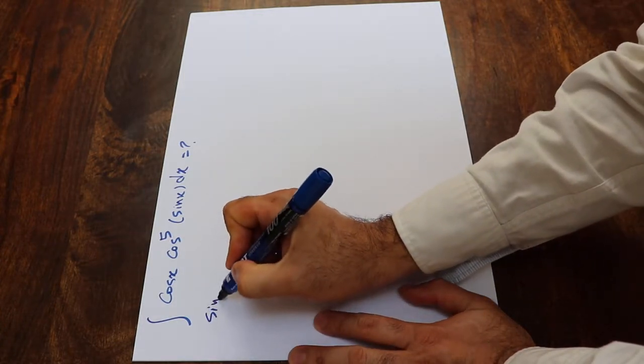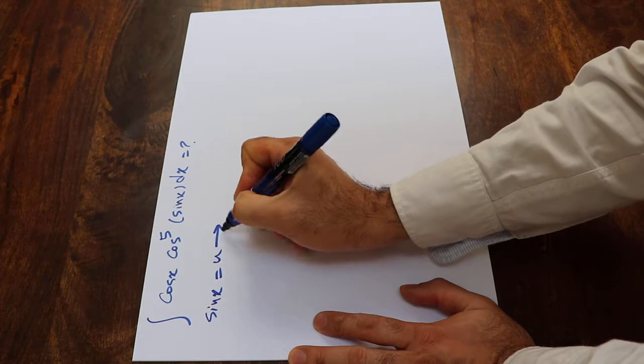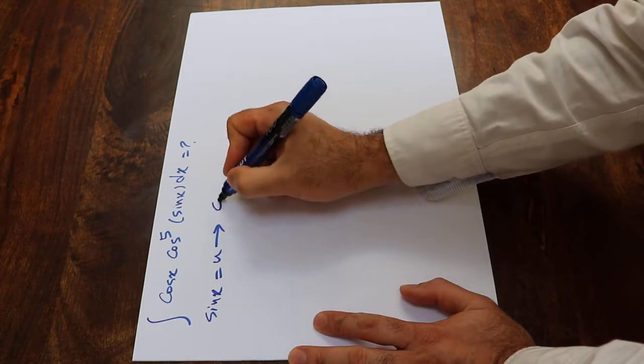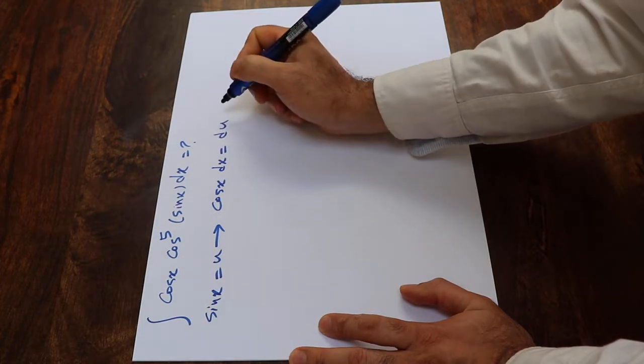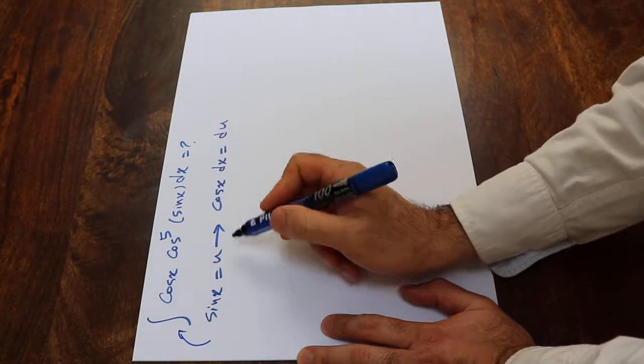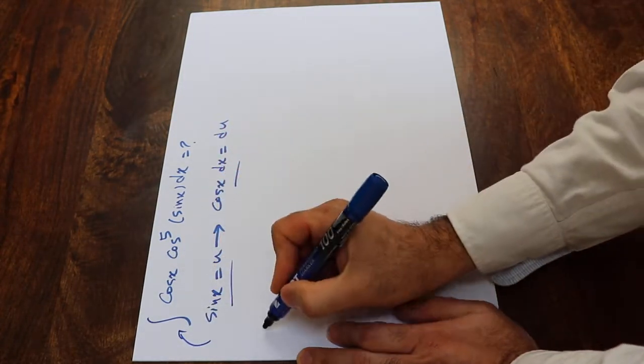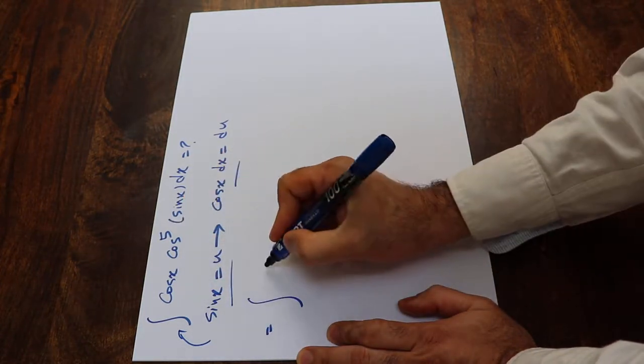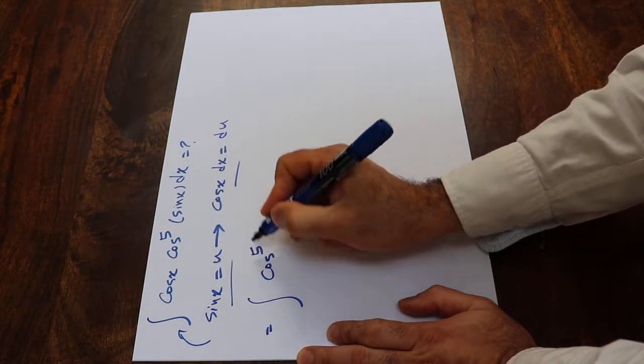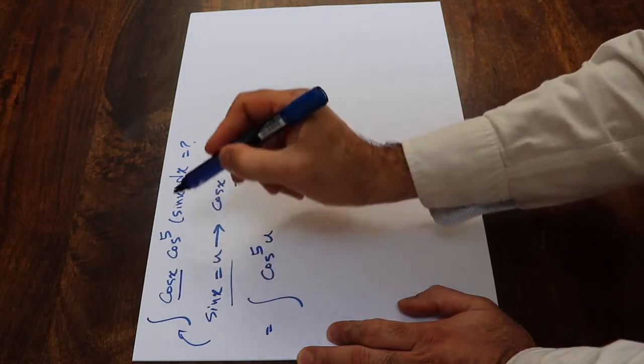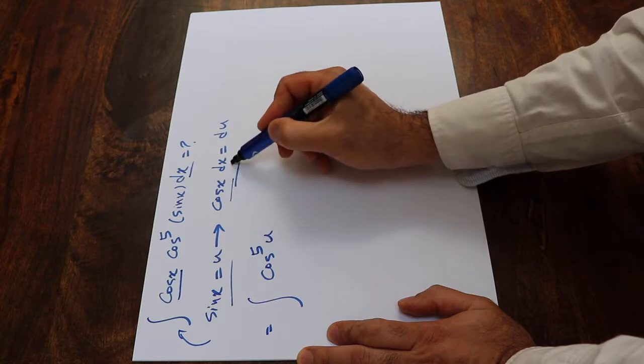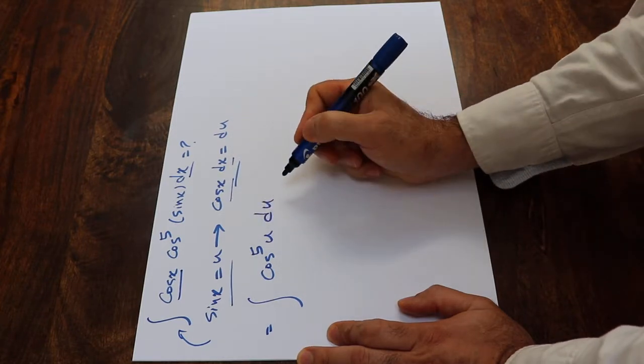If you define sin(x) as u, and take the derivative from each side of this equation, you'll get cos(x)dx equals du. Now if you substitute these two expressions into this integral, you can rewrite this integral as cos⁵(u), and in place of cos(x)dx, I simply write du.